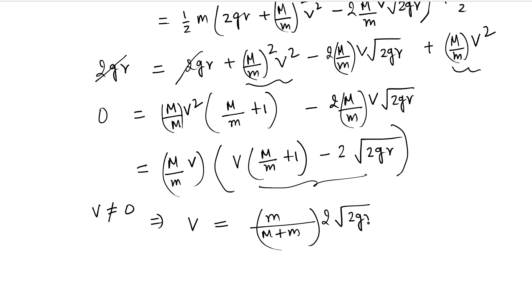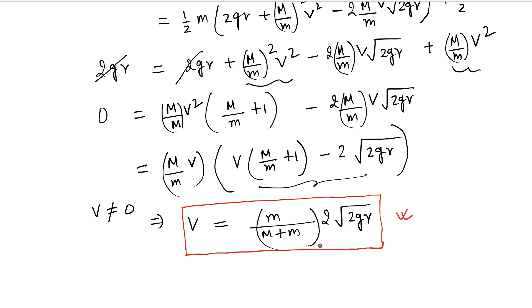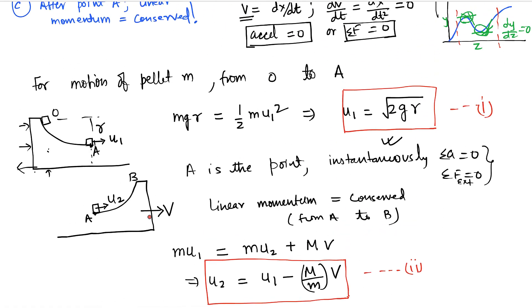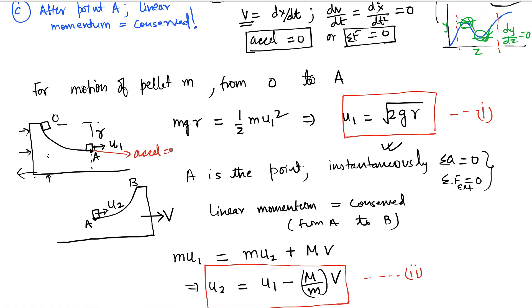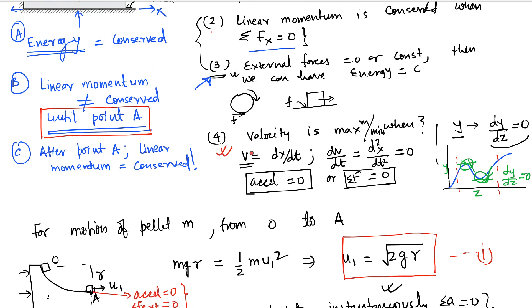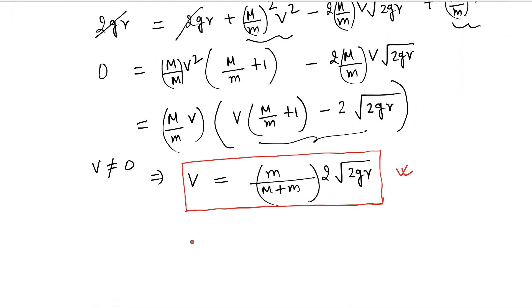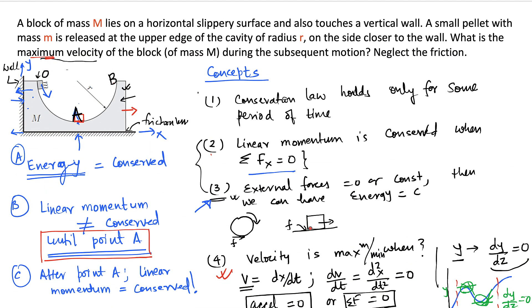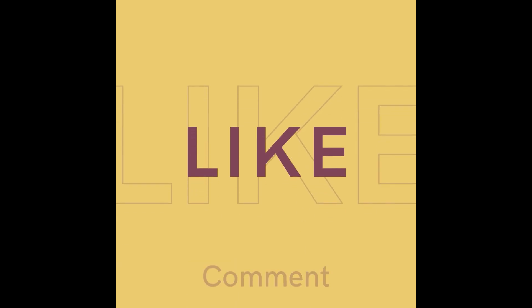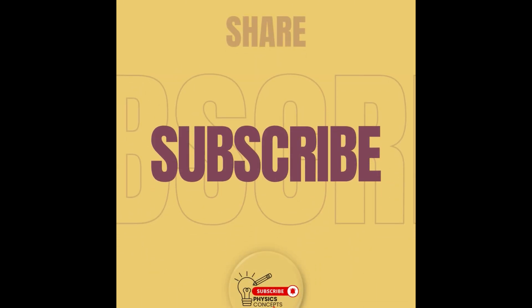So the velocity of the block at point A is V = m/(M+m) × √(2gR), and this is also the maximum velocity. At this point, acceleration is instantaneously zero and external force is zero, which by concept 4 confirms this is the maximum. This is the answer for the maximum velocity of the block during the motion. I hope you liked this video — please subscribe to the channel, share it with your friends, and thank you for watching. Keep up the great work for IIT JEE or other examinations.